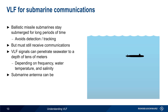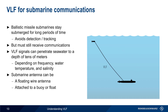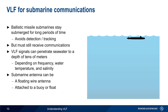The submarine antenna can be either a floating long wire antenna, or it can be attached to a buoy or a float when the submarine is more deeply submerged. Upon receiving a VLF signal, the submarine can then rise to periscope depth and use other, higher frequencies to establish communications if necessary.